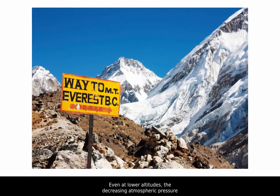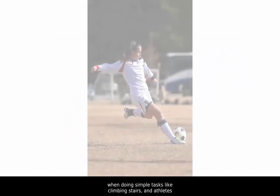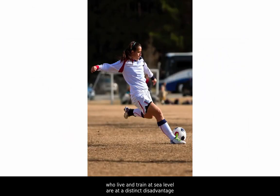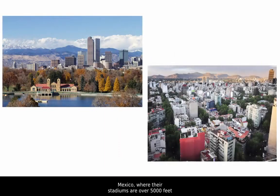But you don't have to climb Mount Everest to experience this. Even at lower altitudes, the decreasing atmospheric pressure and resulting lower PO2 can affect human performance. When in the mountains, perhaps you felt winded or lightheaded when doing simple tasks like climbing stairs. Athletes who live and train at sea level are at a distinct disadvantage when competing in cities like Denver, Colorado, or Mexico City, Mexico, where their stadiums are over 5,000 feet and 7,000 feet, respectively.